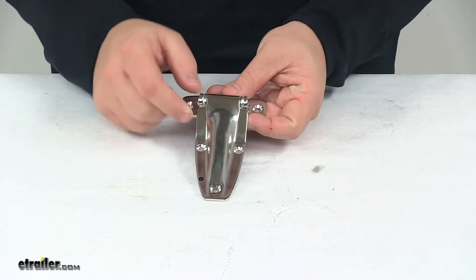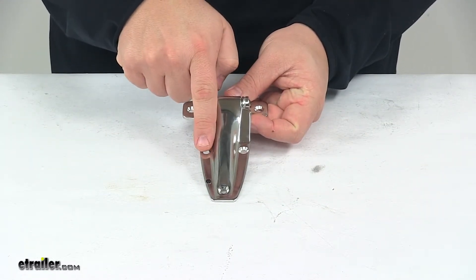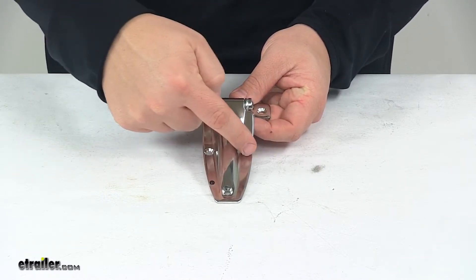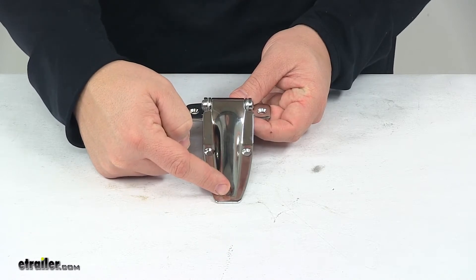The strap holes, this one and this one, are separated on center by one and three-eighths of an inch, and then from the center of these going straight out to the center of this hole is about two inches.